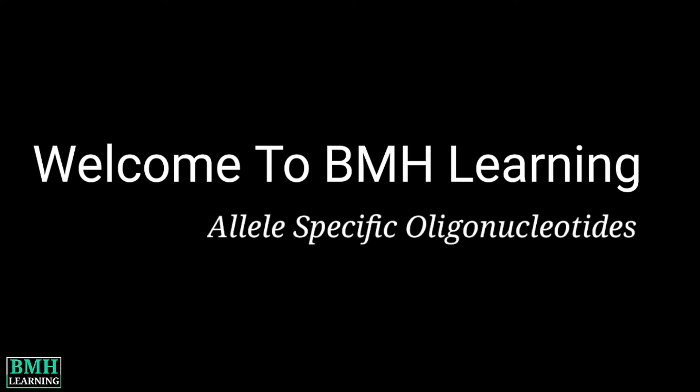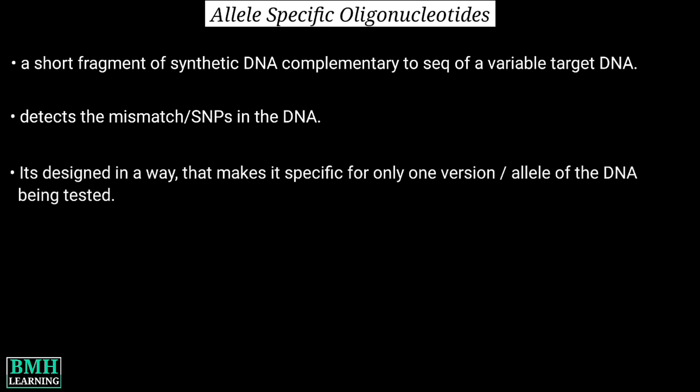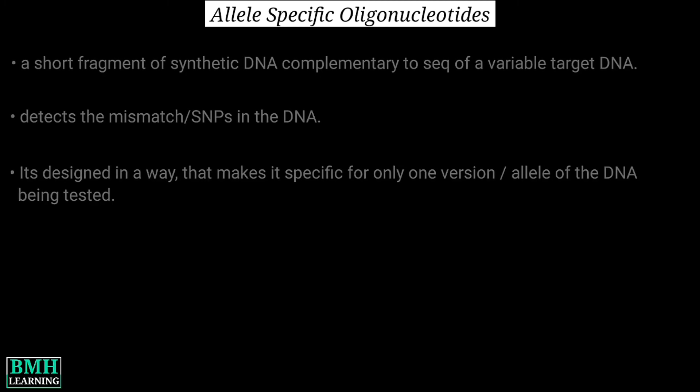Welcome to BMH Learning. In this video we are going to talk about allele specific oligonucleotides. An ASO, or allele specific oligonucleotide, is a short fragment of synthetic DNA that is complementary to the sequence of a variable target DNA. As the definition includes variable target DNA, that simply means it detects mismatches in the DNA, or more importantly SNPs. It is designed in a way that makes it specific for only one version or allele of the DNA being tested.